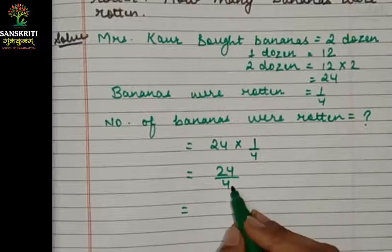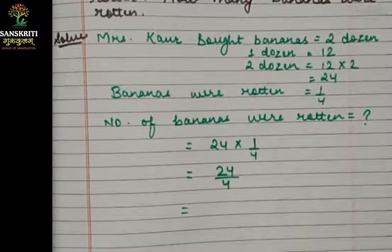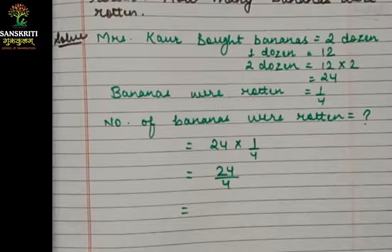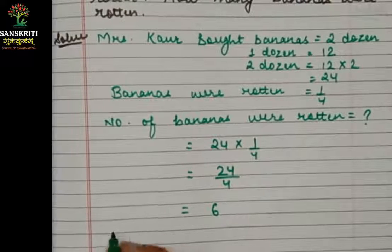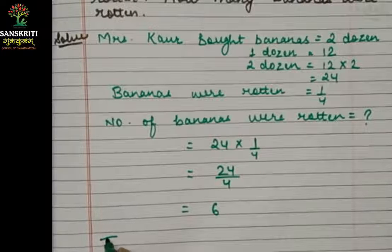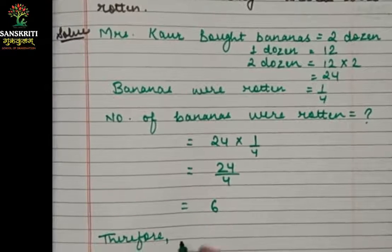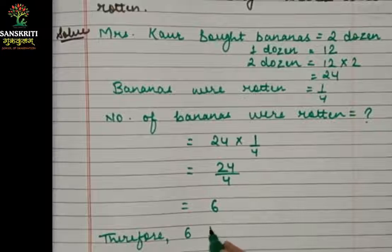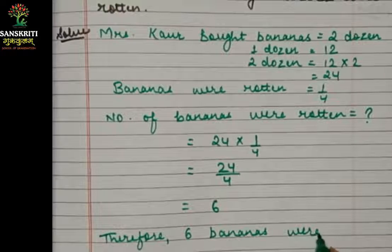Let's read the table of 4: 4 ones are 4, 4 twos are 8, 4 threes are 12, 4 fours are 16, 4 fives are 20, 4 sixes are 24. So we will write 6. Therefore, 6 bananas were rotten.